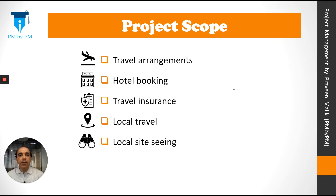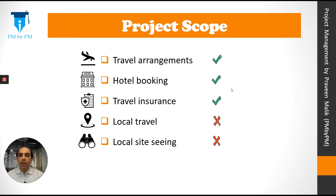But let's understand it from the project manager's perspective. From the project manager's perspective, all five things may not be part of the scope. Let's consider that the first three are part of project scope and the last two are not. So we will do travel arrangements, hotel booking, and travel insurance, but we will not make arrangements for local travel and local sightseeing.